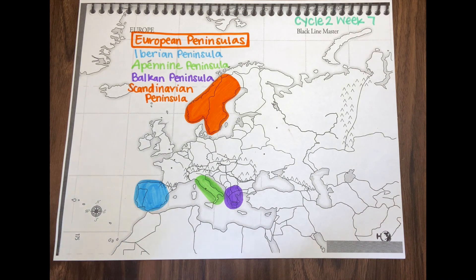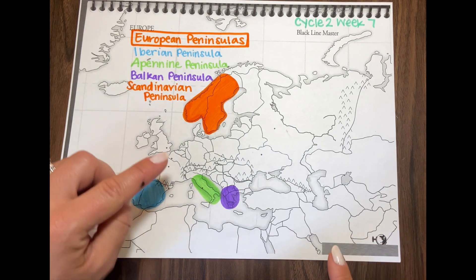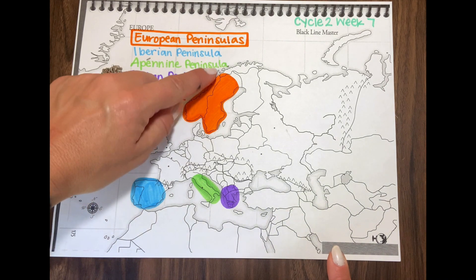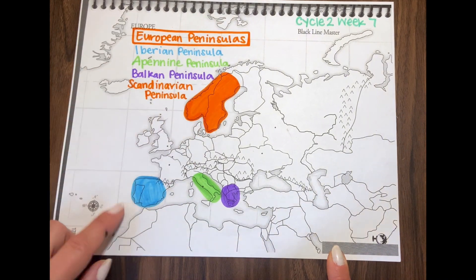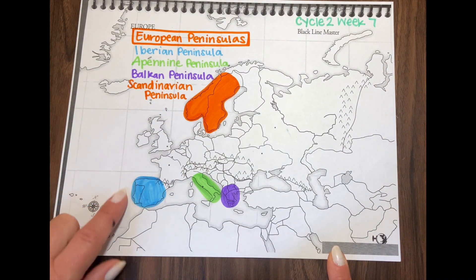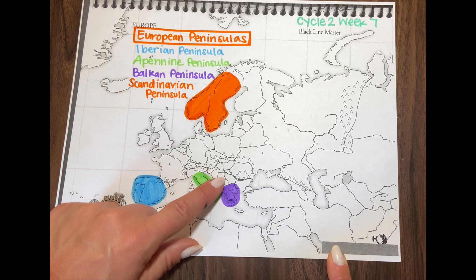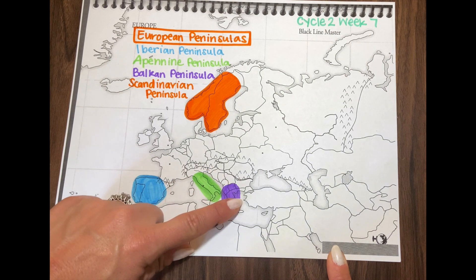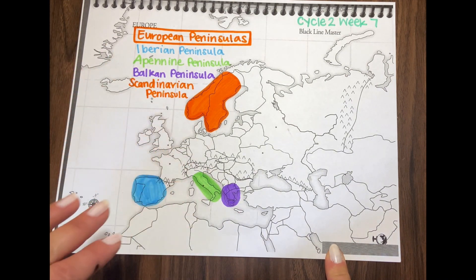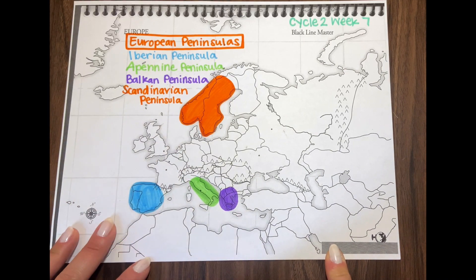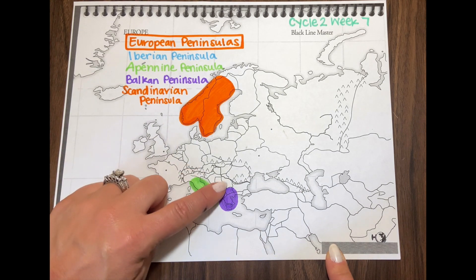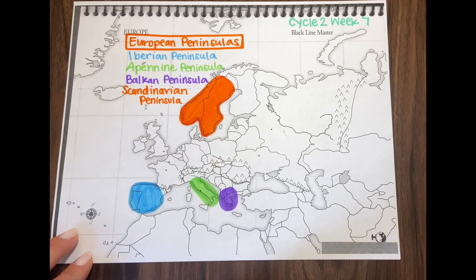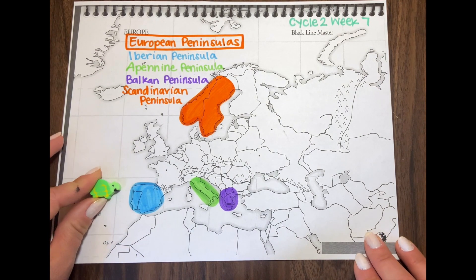What is a peninsula? It is a piece of land that is surrounded by water on three sides. So if you look at each of these peninsulas, you'll see that on at least three sides it is surrounded by water, and on that fourth side it's attached to land.